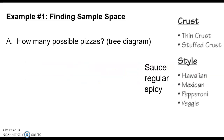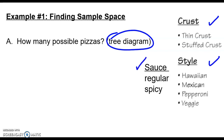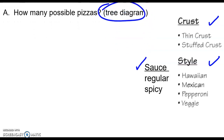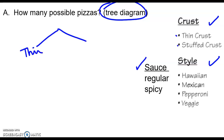The first method we'll look at is called a tree diagram. Let's say you were ordering a pizza. You can pick thin crust or stuffed crust, then Hawaiian, Mexican, pepperoni, or veggie, and then either regular or spicy sauce. A tree diagram starts with your first options — thin crust or stuffed crust — and then branches out from each of those.